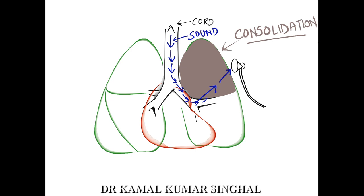Egophony refers to the nasal or bleating quality of speech transmitted through consolidation with a patent bronchus. Bronchophony is the voice of the bronchus when the spoken voice is heard loud but not very clear, as if one is hearing it near the earpiece of the stethoscope.